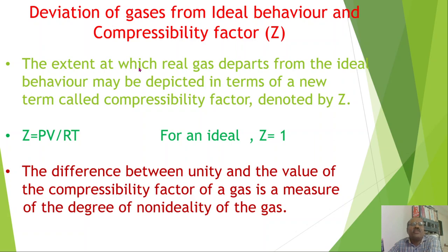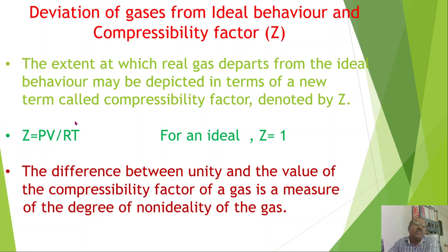The extent to which a real gas departs from ideal behavior is depicted by a term called the compressibility factor, denoted by Z. It measures how much the real gas has departed from ideal behavior. Z is defined as PV/RT, so Z = PV/RT. Z is the compressibility factor.